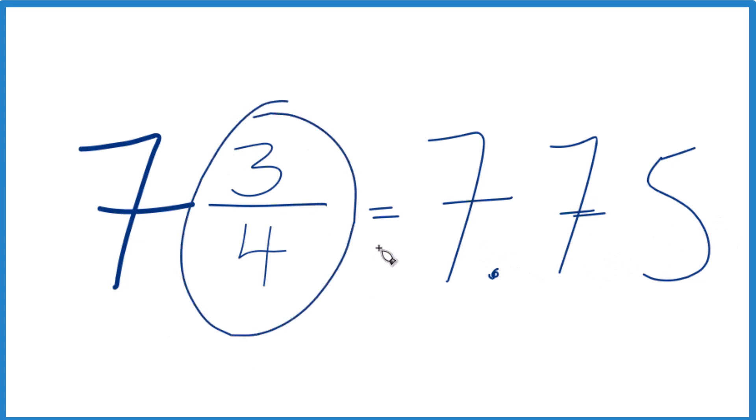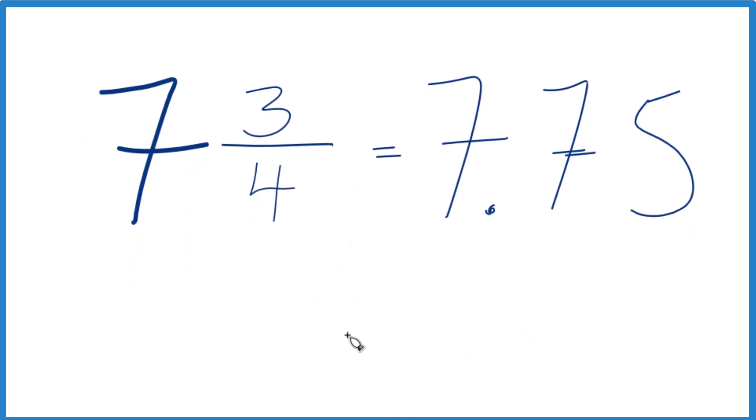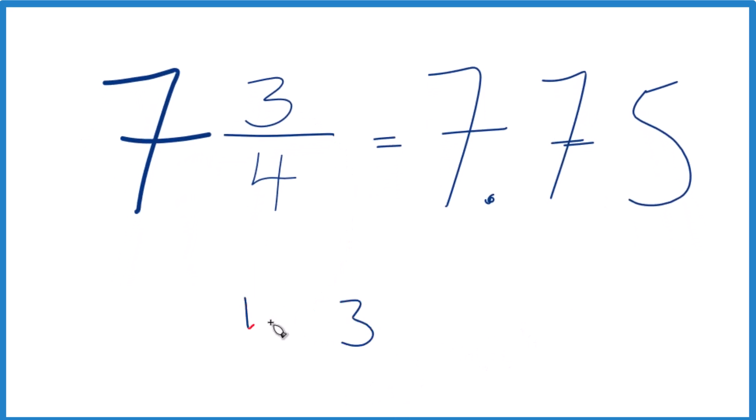But if you didn't know that three-fourths was equal to 0.75, you could divide three by four. So take three, see how many times four goes into three. Well, four doesn't go into three, but we could call this 30 if we put a zero and a decimal point up here.